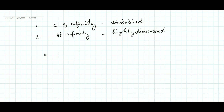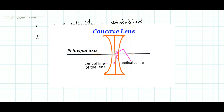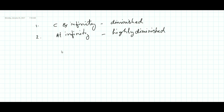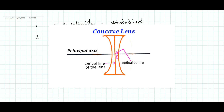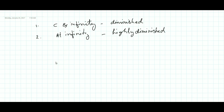Unlike the convex lens which has six object positions, for the concave lens we only need to learn two object positions for image formation. As the object is shifted from the optical center towards infinity, the image shifts from the optical center towards the focus. I will now show the first condition with the ray diagram.